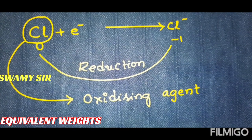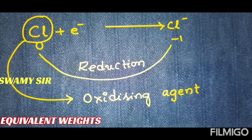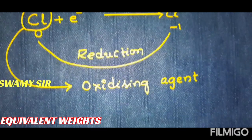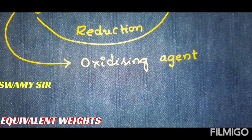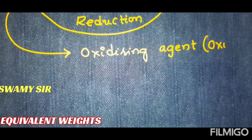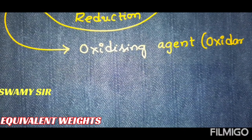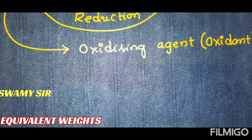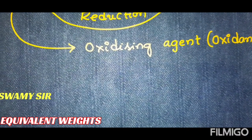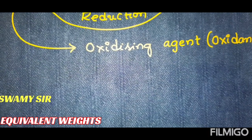Reducing agents are commonly called reductants. Oxidizing agents are commonly called oxidants. For better understanding, I will take two more examples.